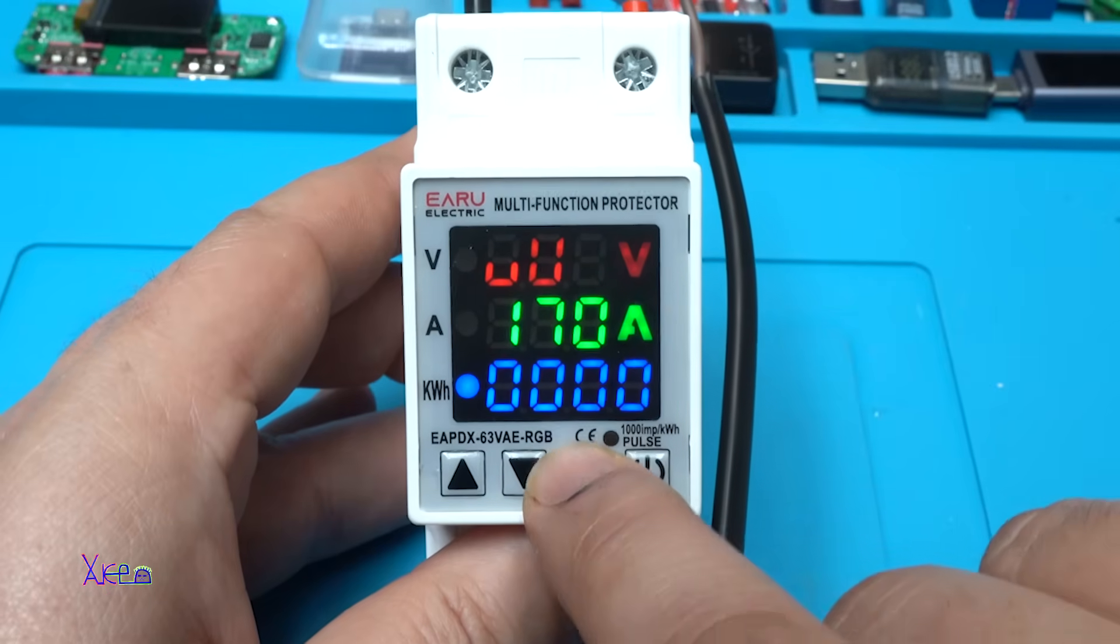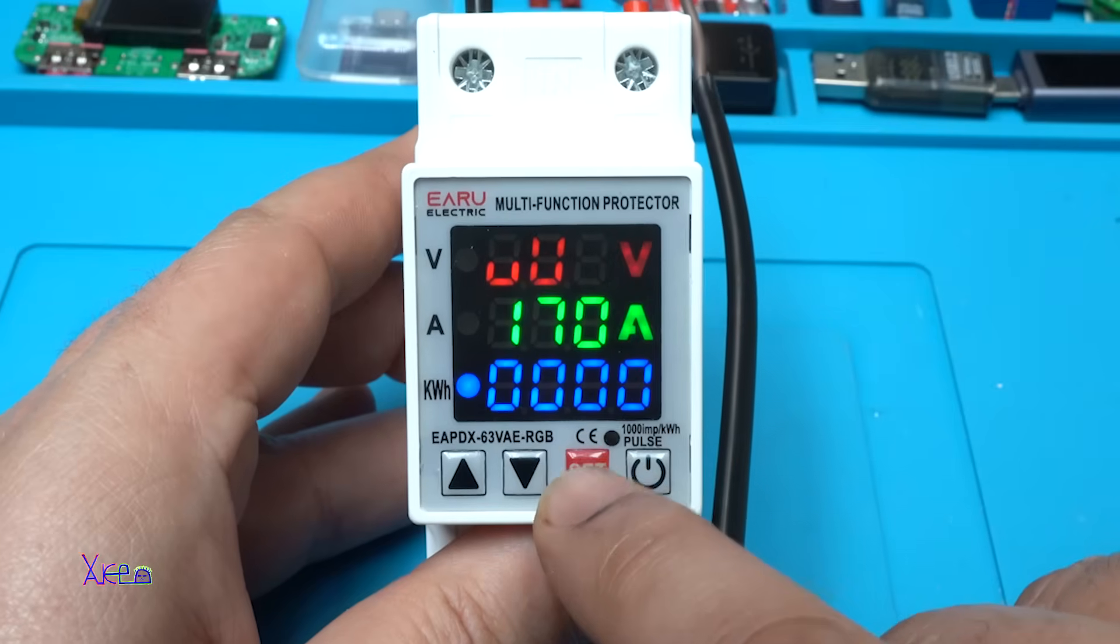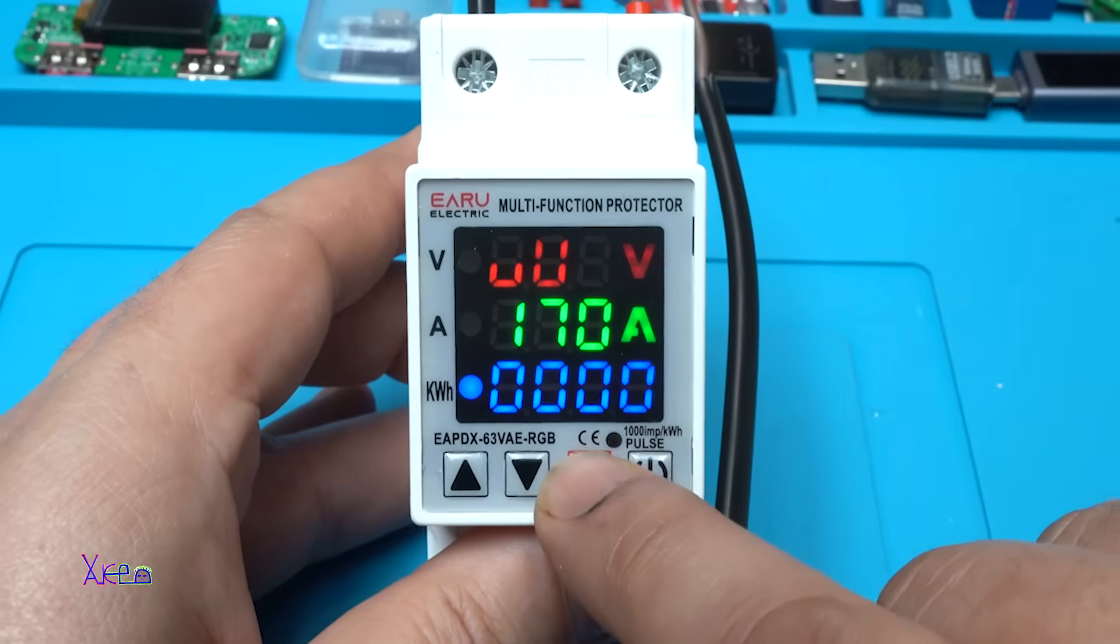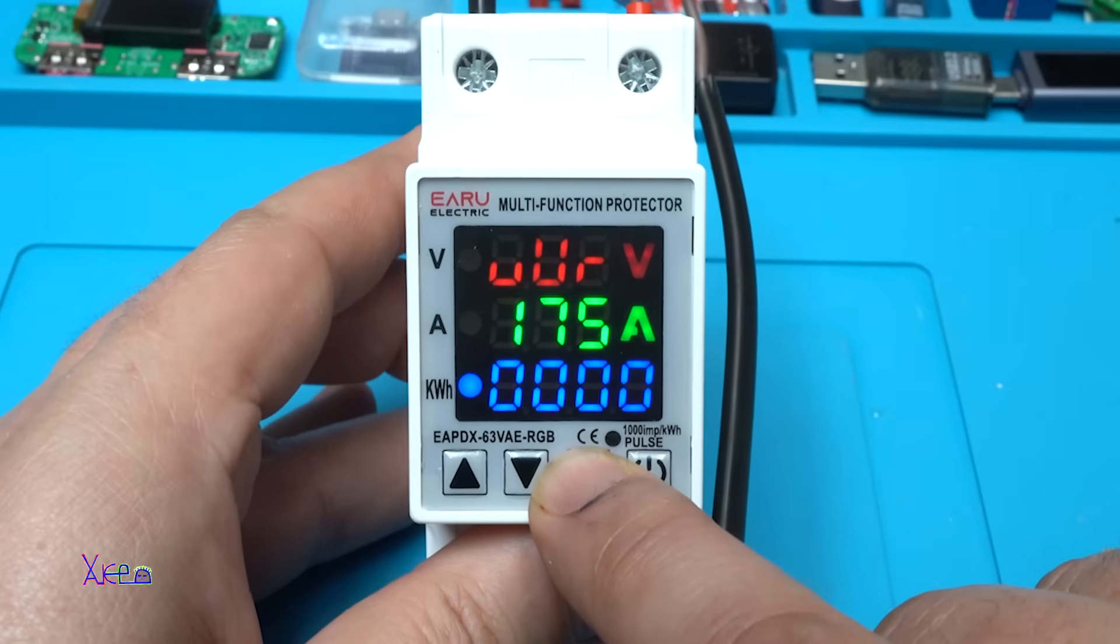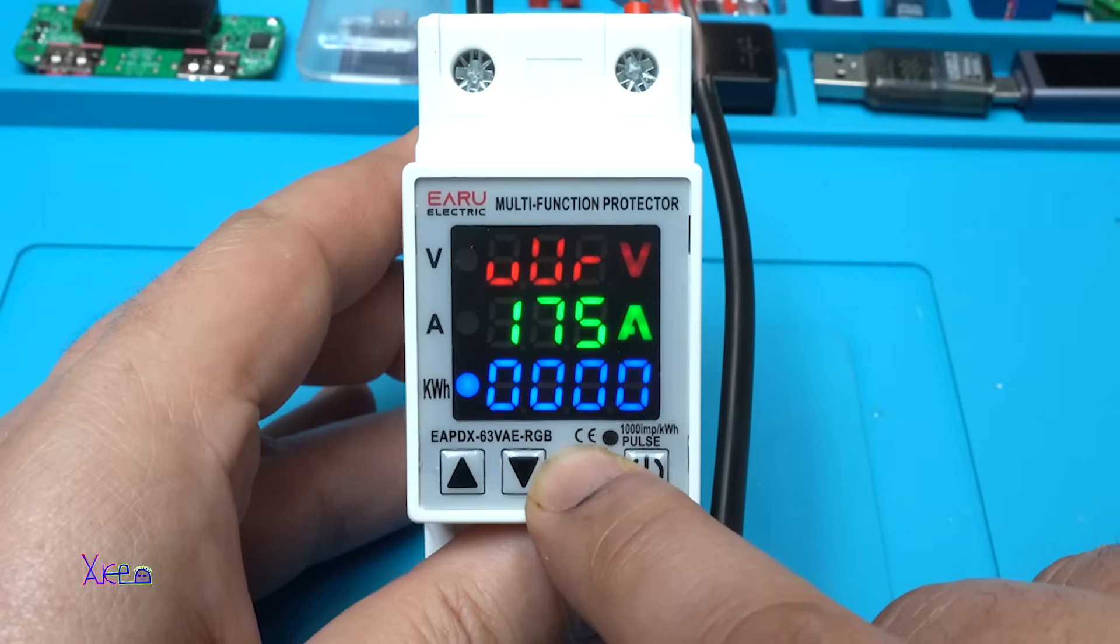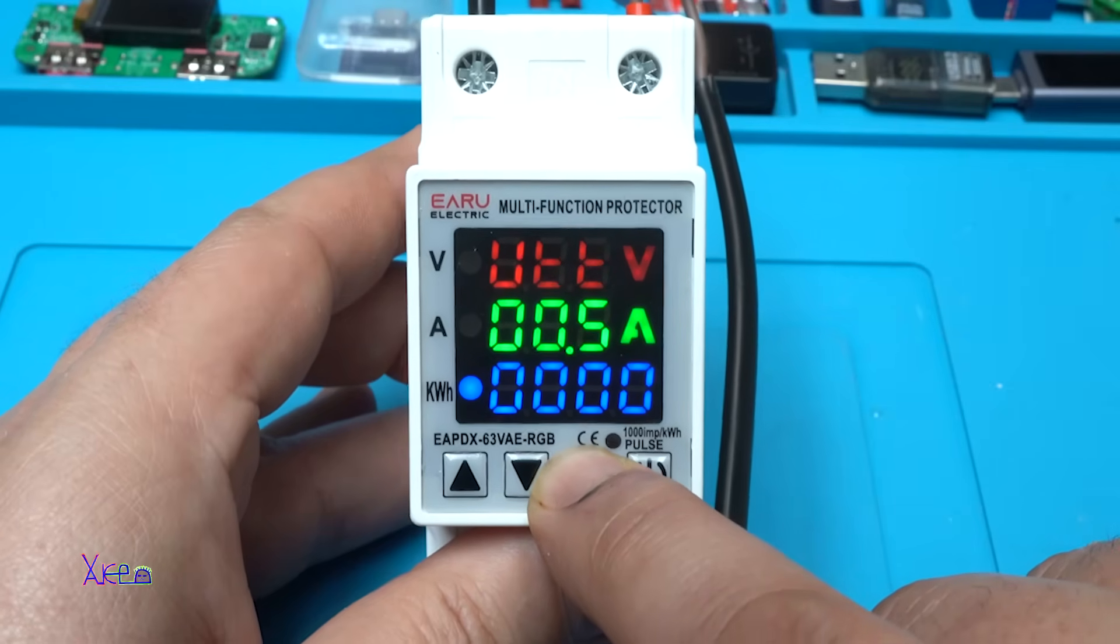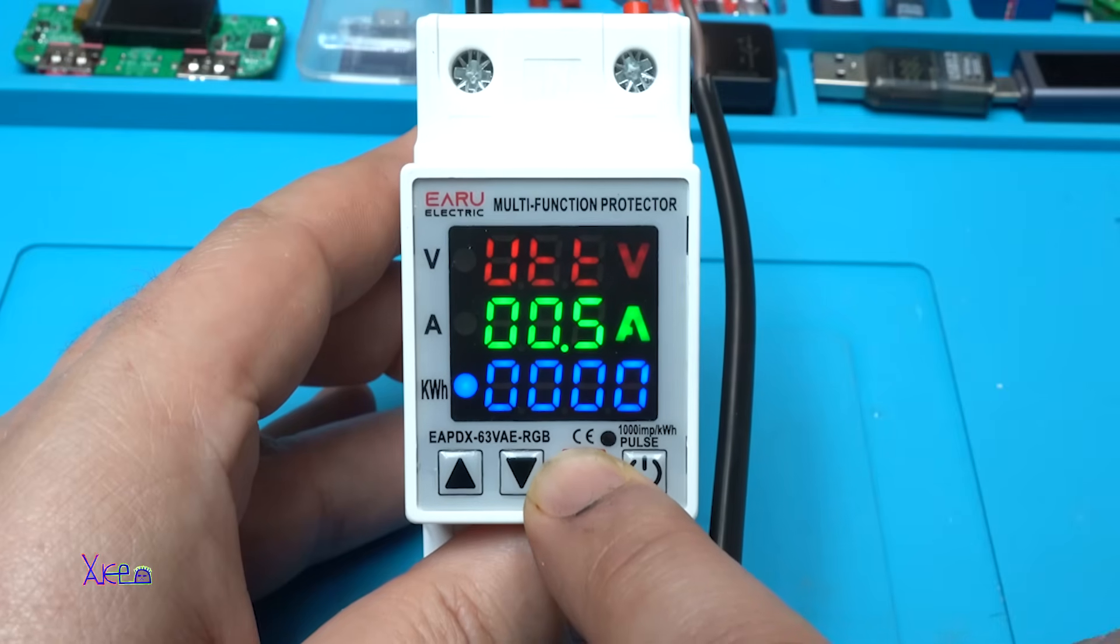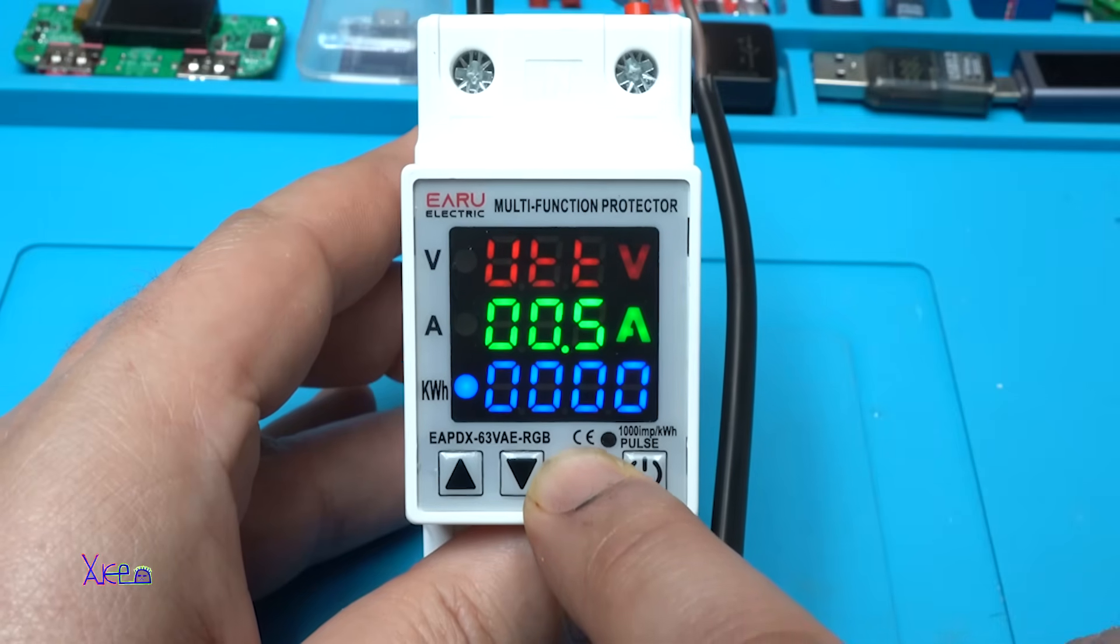Undervoltage settings. If the voltage drops below 170 volts, the module will protect you. This is undervoltage recovery settings. This one is over, undervoltage protection action delay time.